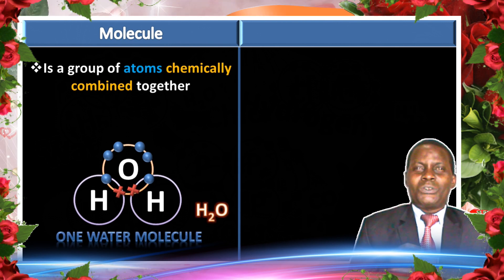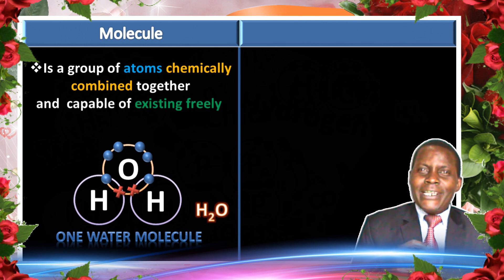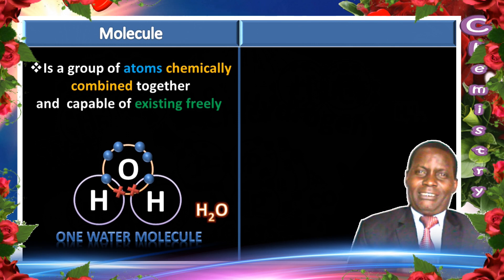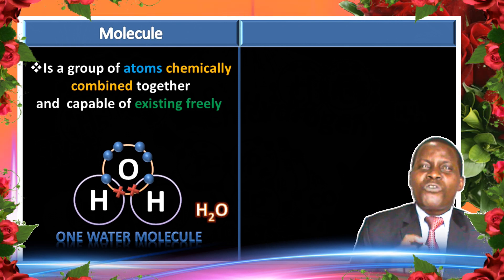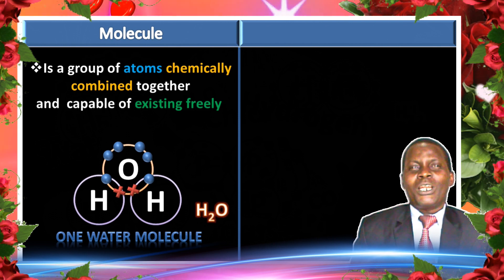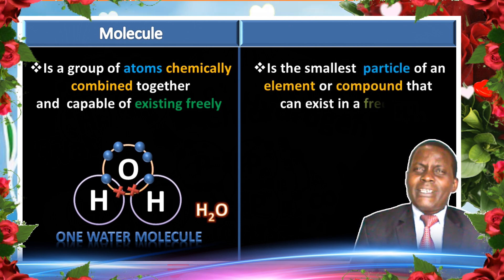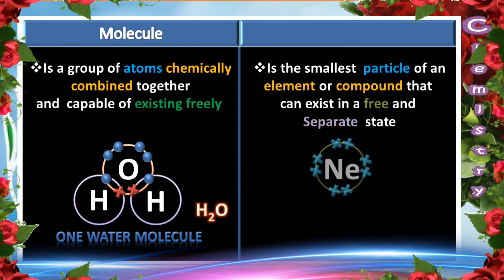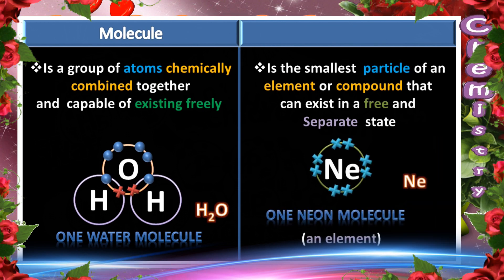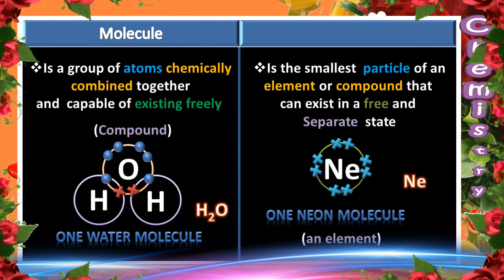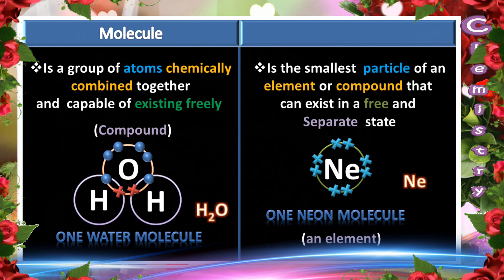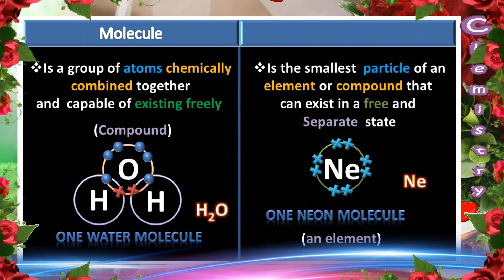A molecule is a group of atoms which are chemically combined together and can exist in a free state. We can also say a molecule is the smallest particle of an element or a compound that exists in a free and separate state.